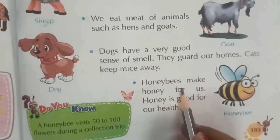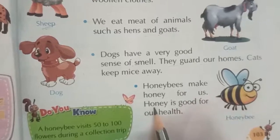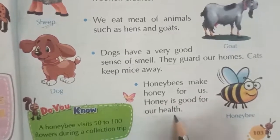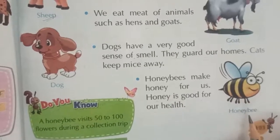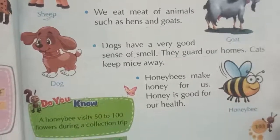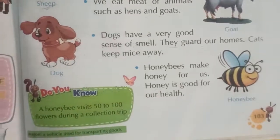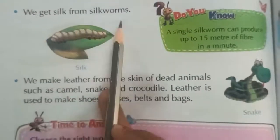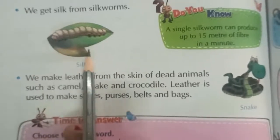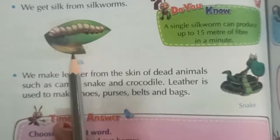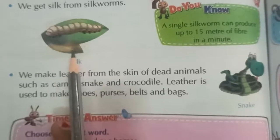Honey bees make honey for us. Honey is good for our health. We also get silk from silkworms, which is useful to make clothes.